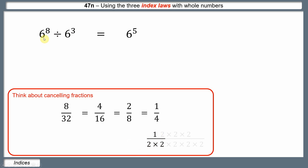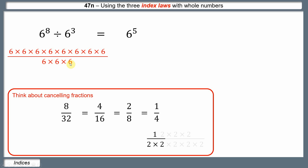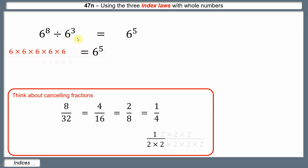Applying that to our example: 6 to the power of 8 is 6 times itself 8 times. Writing 6 cubed as a fraction on the bottom — 6 times itself 3 times — we can cancel by removing a 6 from top and bottom three times. That takes 3 sixes away from the bottom and 3 from the top, leaving 6 times itself 5 times: 6 to the power of 5. So when dividing, the powers get subtracted.